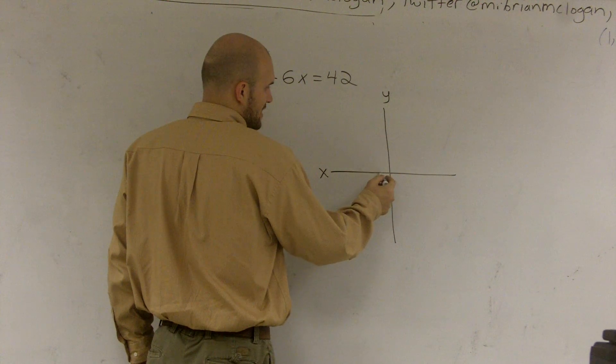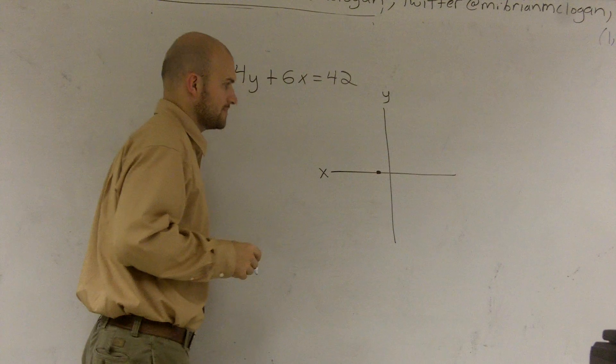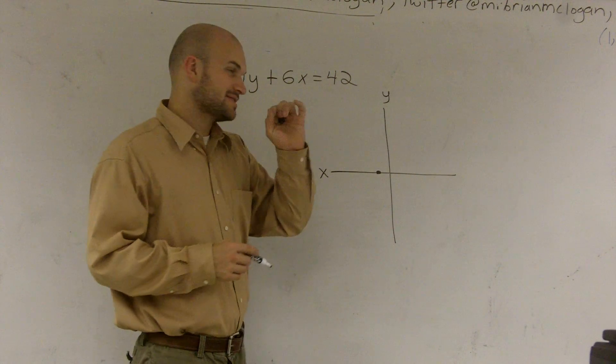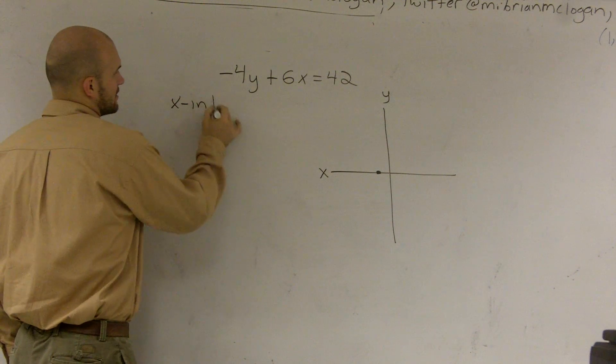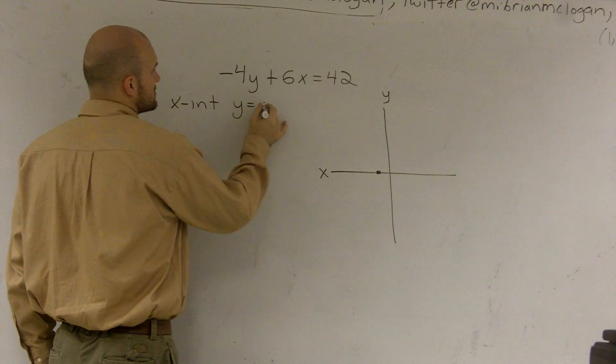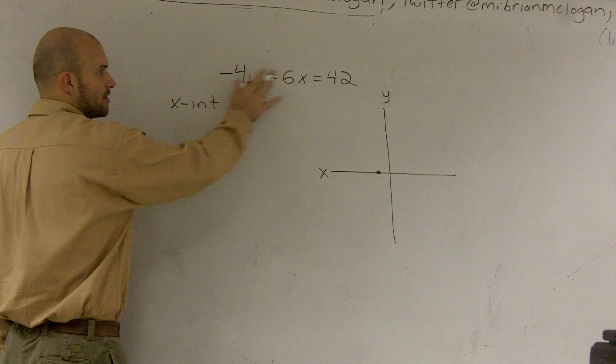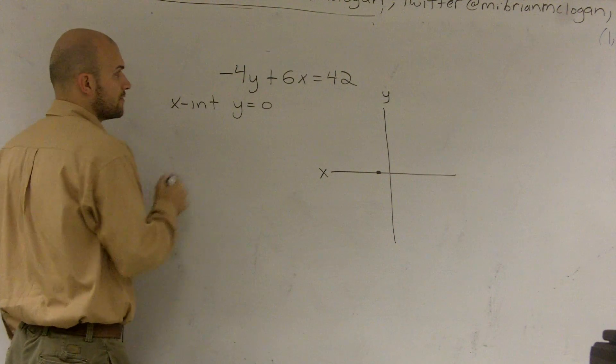So if I was given some random x-intercept, let's say I choose this point, the value on my y-intercept is going to be 0. So to find the x-intercept, I'm going to say y equals 0. So in my function, or in my equation, I'm going to plug in 0 for y.